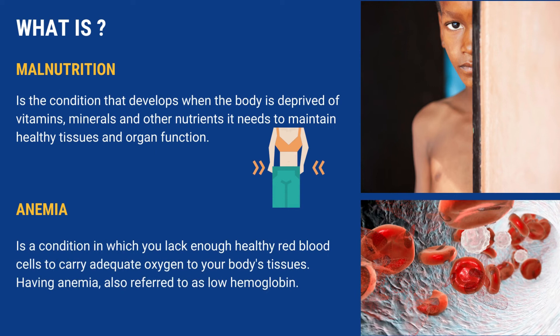Malnutrition is the condition that develops when the body is deprived of vitamins, minerals, and other nutrients it needs to maintain healthy tissues and organ function. Anemia is a condition in which you lack enough healthy red blood cells to carry adequate oxygen to your body's tissues, also referred to as low hemoglobin.